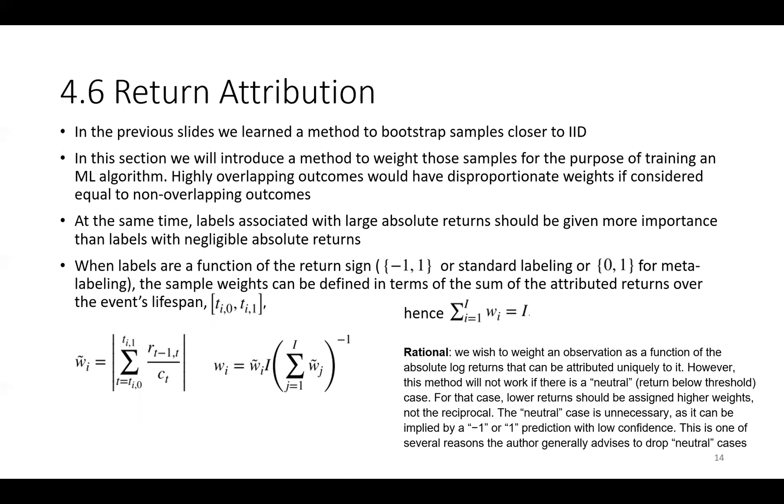The rationale behind is that we wish to weight an observation as a function of the absolute log returns that can be attributed uniquely to it. However, this method will not work if there is a neutral or return below threshold case. For that case, low returns should be assigned higher weights, not the reciprocal. The neutral case is unnecessary, as it can be implied by a -1 or a 1 prediction with low confidence. This is one of the several reasons the author generally advises to drop neutral cases.